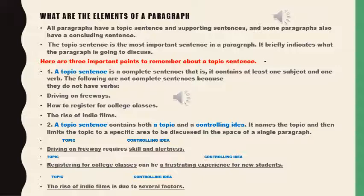What are the elements of the paragraph? Each paragraph has three elements: a topic sentence, supporting sentences, and some paragraphs have a concluding sentence. If we are writing just one paragraph, we must have all three elements. If we are writing an essay with many paragraphs, it is not a must to have a concluding sentence for each paragraph, because we will have a conclusion for the whole essay.